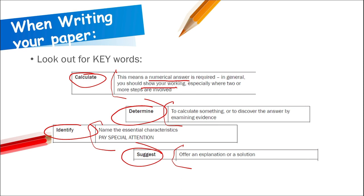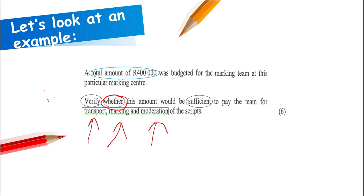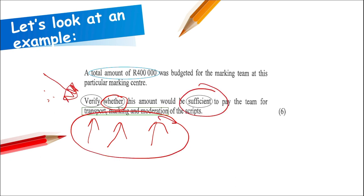Here's an example from a past paper: a total amount of R400,000 was budgeted for the marking team. The keyword is 'verify whether this amount is sufficient.' 'Verify' means at the end you say 'yes, it was' or 'no, it was not.' 'Whether' means it can be either. 'Sufficient' means enough. They also tell you the three things to consider — reading carefully gives you a clear idea of how to approach and answer the question.